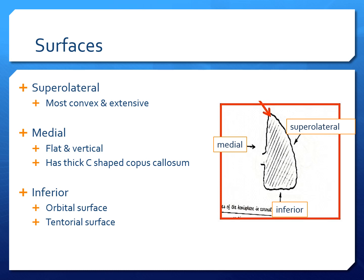The superolateral surface is most convex and extensive. The medial surface is flat, and the inferior surface has got two parts: orbital surface and the tentorial surface.